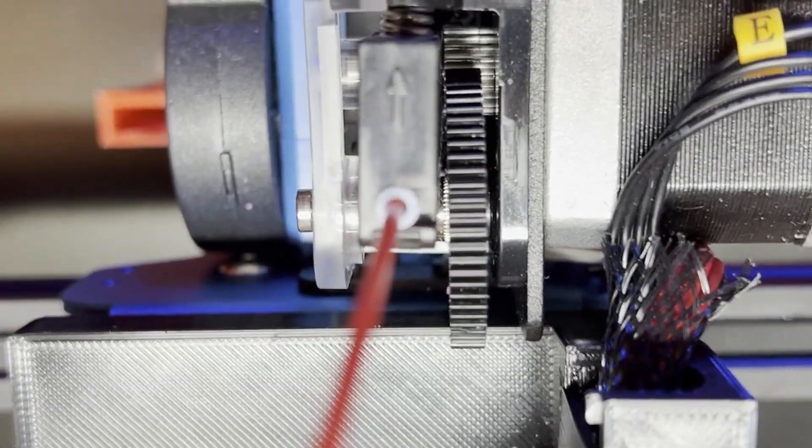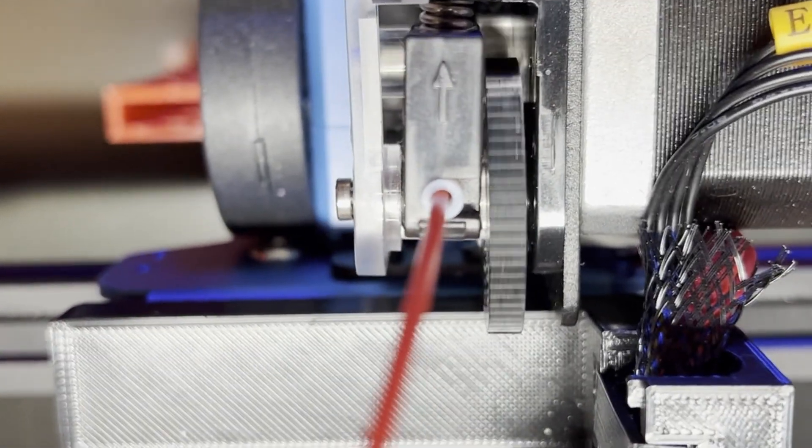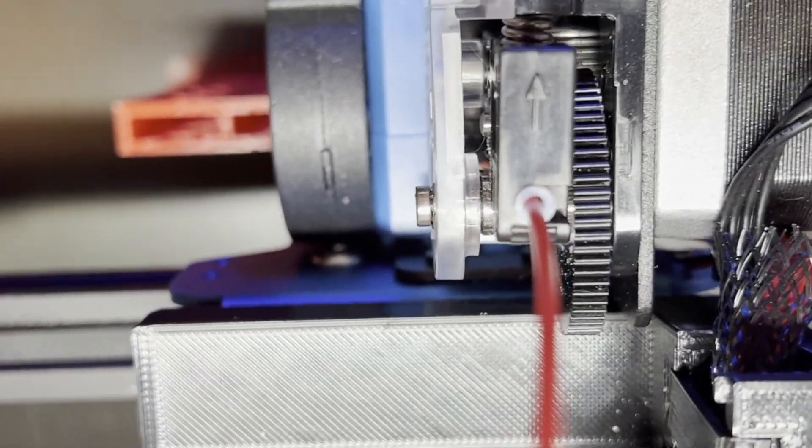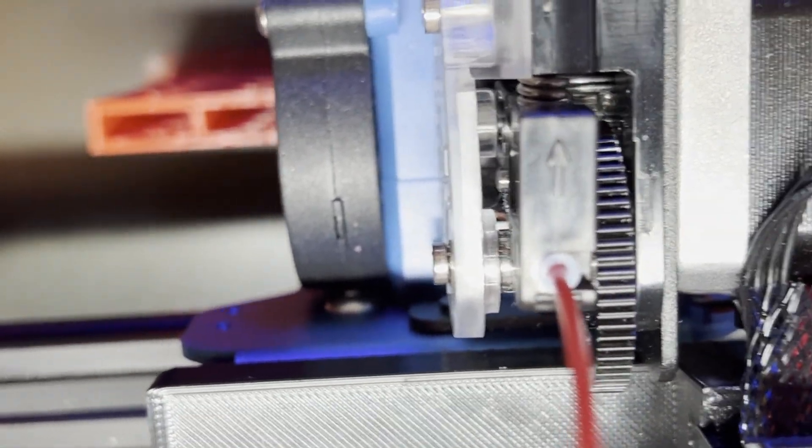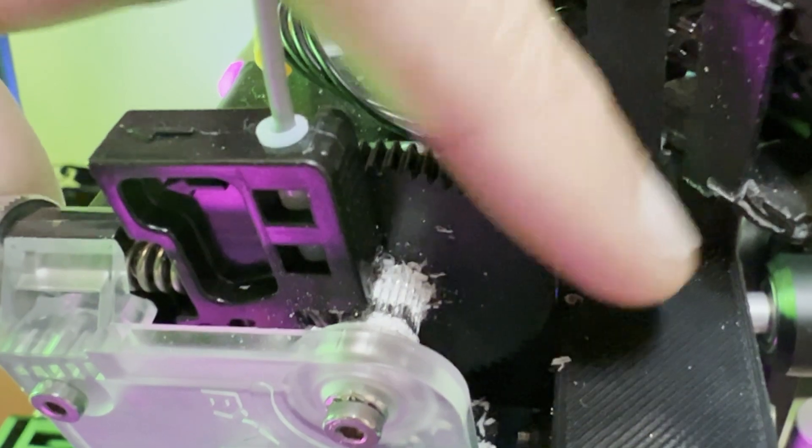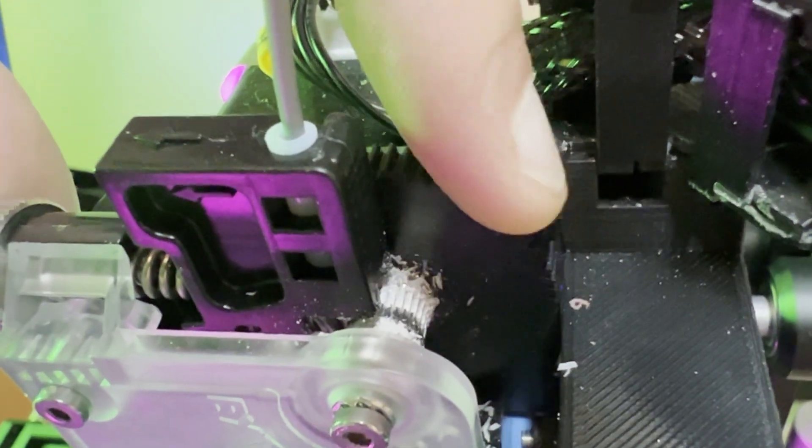If the filament does get stuck, the gear will keep on spinning and can grind away enough filament that there's nothing left to grab onto. All you're left with is the stripped filament with shavings all over the place. Luckily, it's not too difficult to clean up.